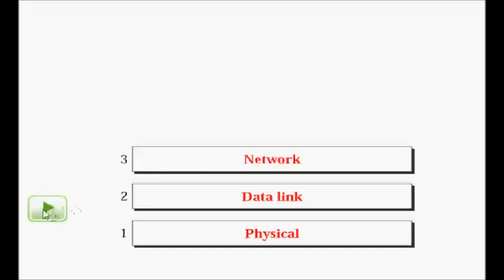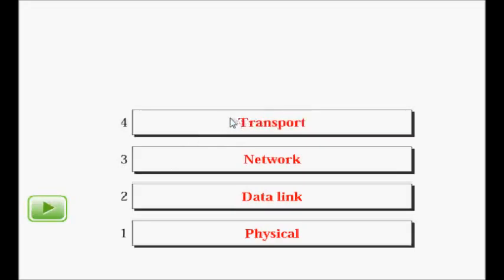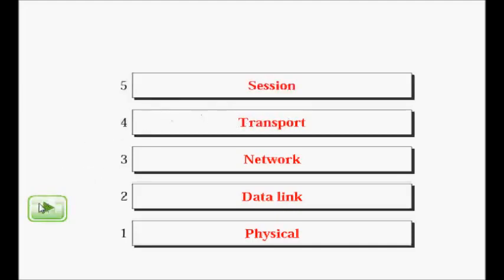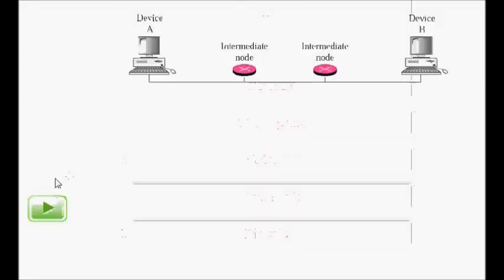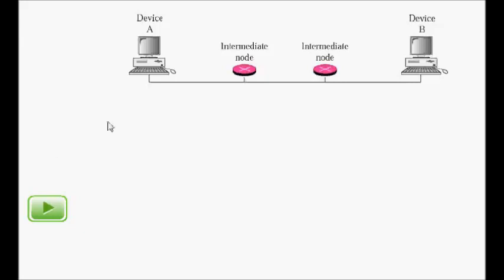The network layer handles how computers communicate over a large network like the internet, using IP addresses. Then we have the transport layer, which handles how application processes interact with each other. The session layer handles the starting, ending, and controlling of sessions. The presentation layer handles how data is formatted and written, and finally there is the application layer.